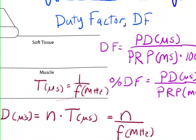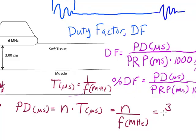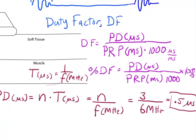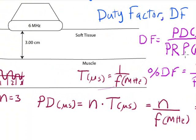My units when I finish this will be in microseconds. So I have three full cycles divided by six megahertz transducer, and that's equal to just one half or 0.5 microseconds. So that's my pulse duration in microseconds.